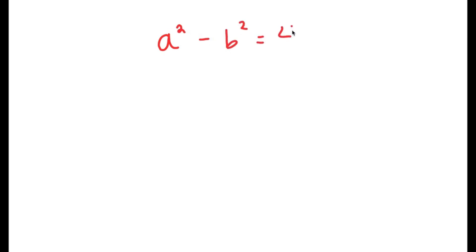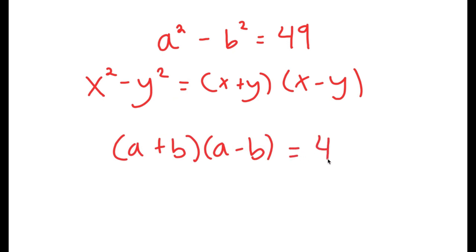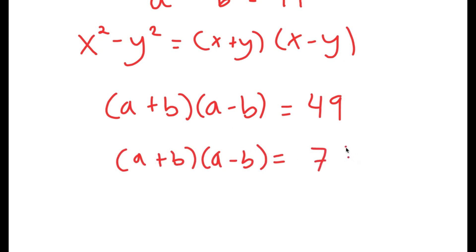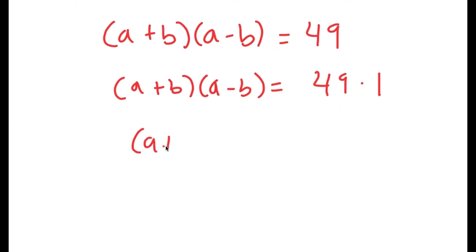In this video, I'm going to solve the equation a squared minus b squared is equal to 49. To solve this, I'm going to use the property that if I have something in the form x squared minus y squared, this is equal to x plus y times x minus y. In this case, a squared minus b squared turns into a plus b times a minus b is equal to 49. From here, I can rewrite 49 as 49 times 1, which is also the same as 7 times 7.